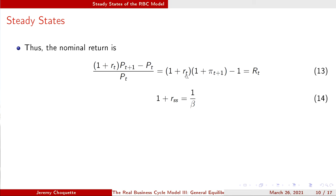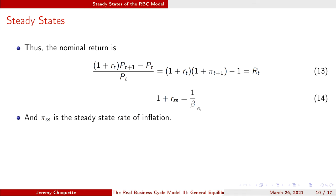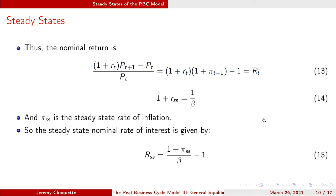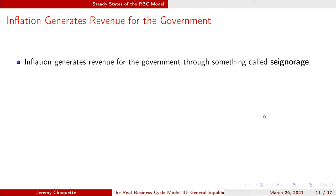One plus the real interest rate times one plus the inflation rate equals one plus the nominal interest rate. Reducing this: the steady-state nominal interest rate equals (1 + π_SS)/β − 1, where π_SS is steady-state inflation. The nominal interest rate varies one-for-one with inflation: if inflation goes up one percent, the nominal interest rate also goes up one percent.